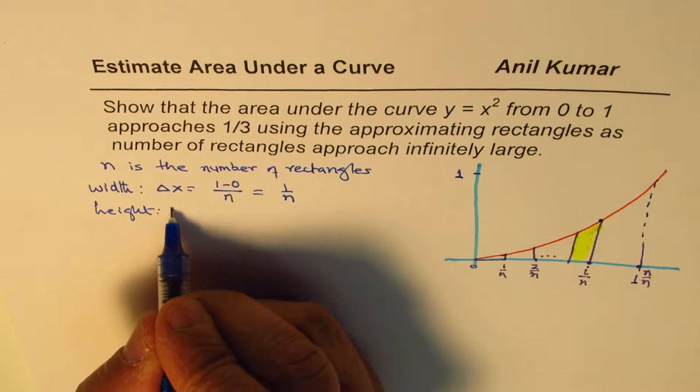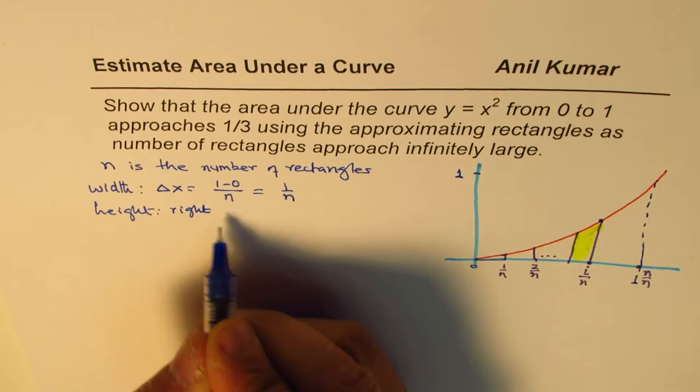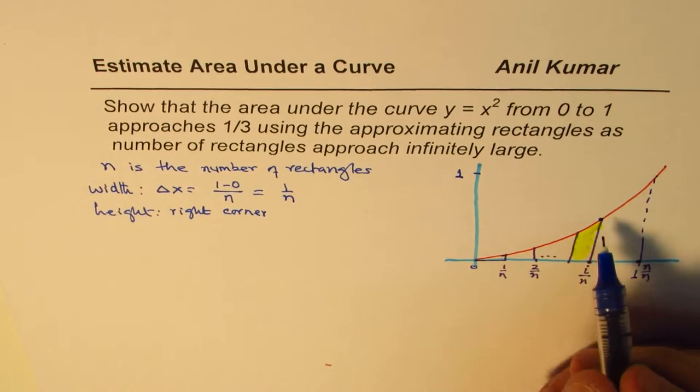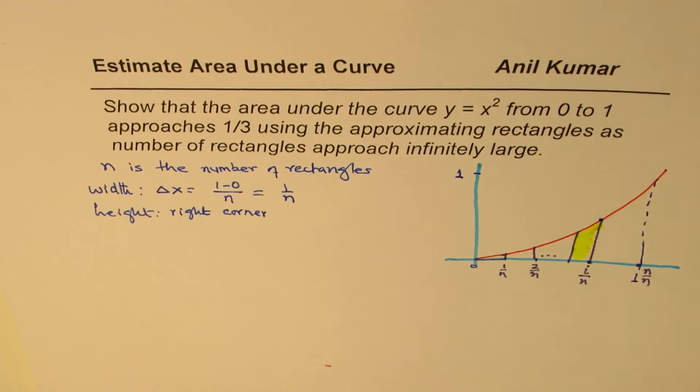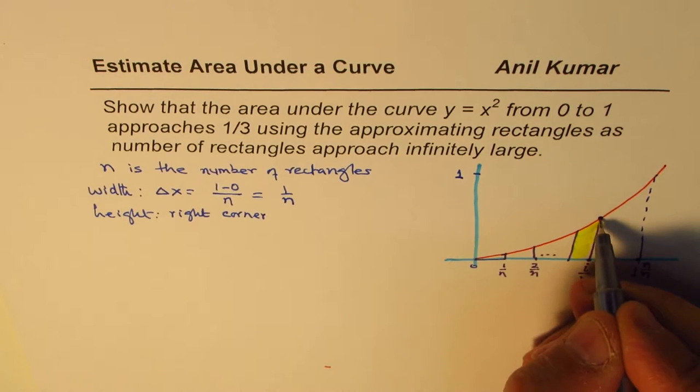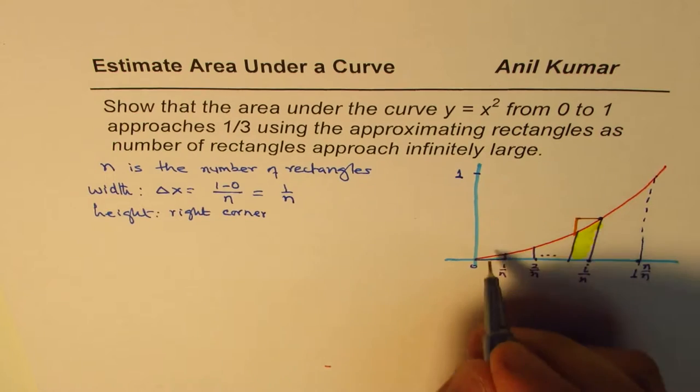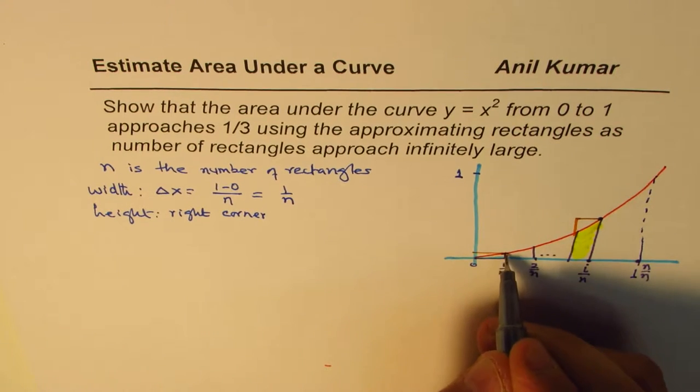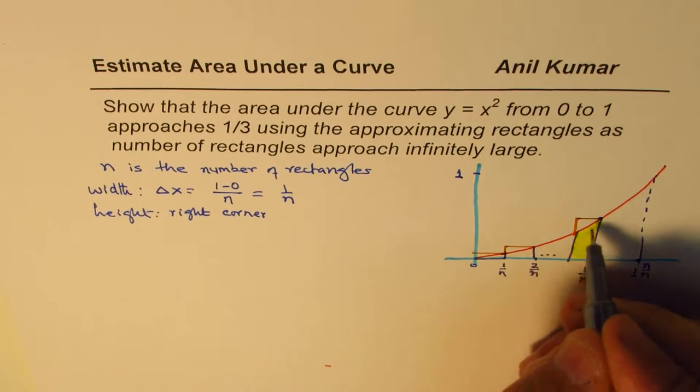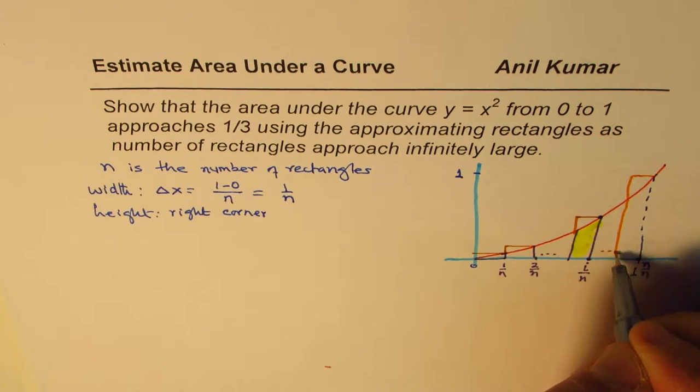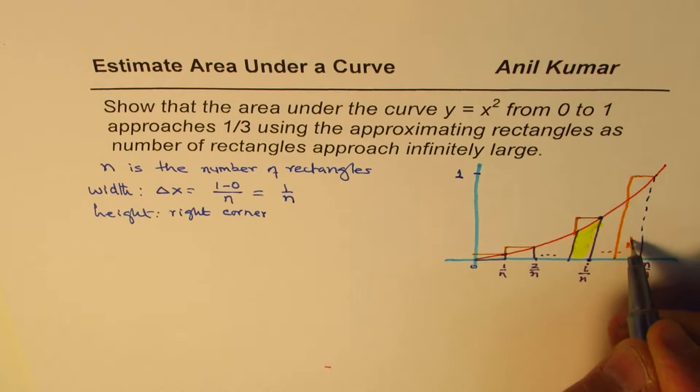The height will see the right corner. So if I'm using the right corner, in that case you will see that our estimate will be slightly higher, because see for example if I form this rectangle so that much is the extra. So we begin with the very first one kind of like this and we can continue like this. The last one will be kind of here like this. So that becomes the nth, this is the ith.